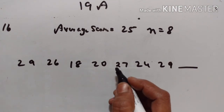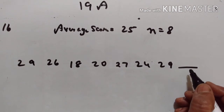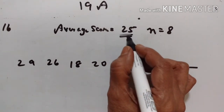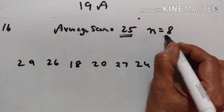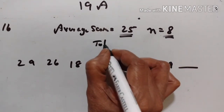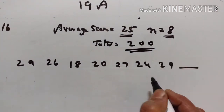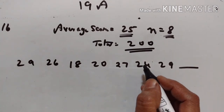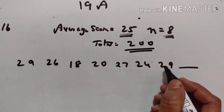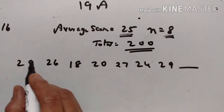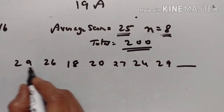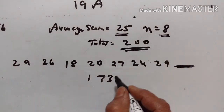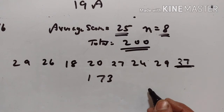16th problem: in a series of tests, A appeared for 8 tests, each marked out of 30, with an average of 25. So total marks scored is 8 times 25, that is 200. A could find only 7 of the test papers. For those 7 tests the scores add up to 173. To find the 8th test score: 200 minus 173 equals 27. So he scored 27 in the 8th test.